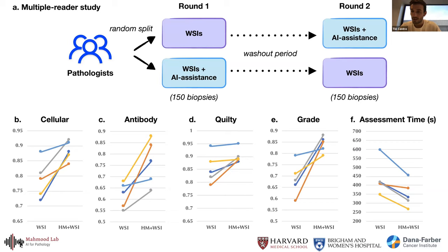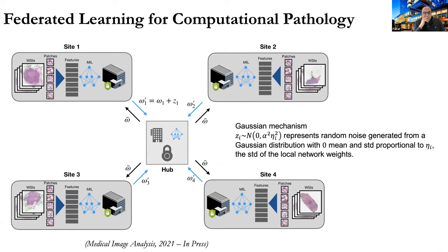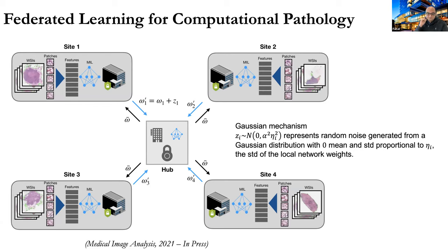A question asks how pathologists from low-resource organizations can benefit without a scanner. Faisal explains that coupling a cell phone to a microscope is common but hard to standardize since cell phone and microscope types vary widely. The preferred solution is the 3D printed microscope at around $300, which standardizes the image collection procedure in lower-resource settings.